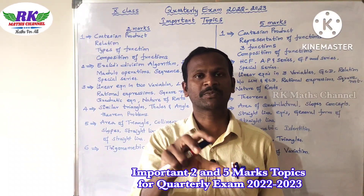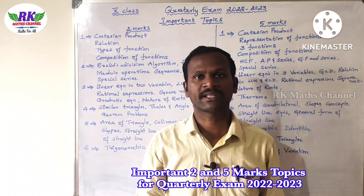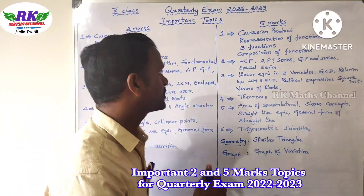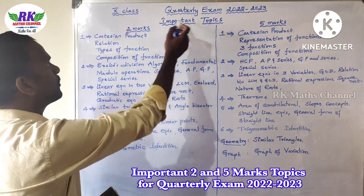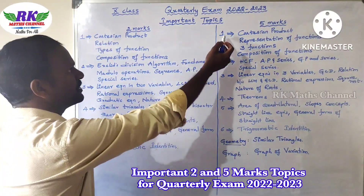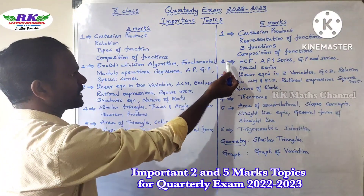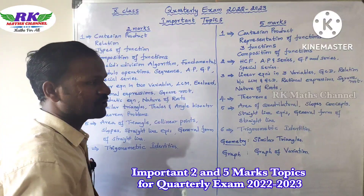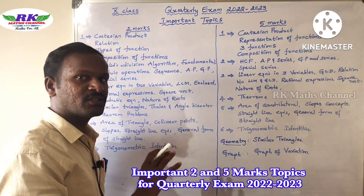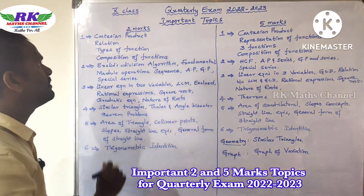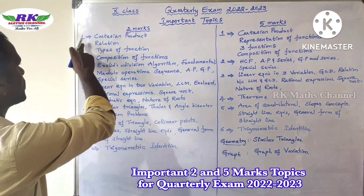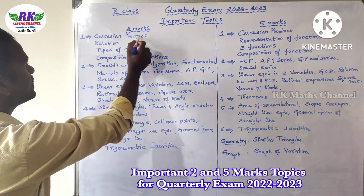We are talking about important topics — 2 marks and 5 marks. The quarter exam covers 1st, 2nd, 3rd, 4th, 5th, and 6th units. So the quarter exam is up to 6 units. Let's see what we are talking about. So 1st unit, 2 marks: Cartesian product.